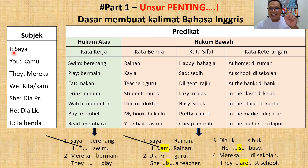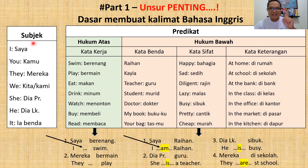Ada I (saya), you (kamu), they (mereka), we (kita atau kami), she (dia perempuan), he (dia laki-laki), it (itu benda). Saya yakin semuanya sudah hafal ini. Bagi yang belum hafal, ya wajib hafal.